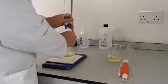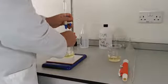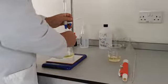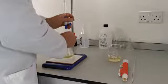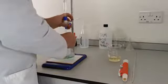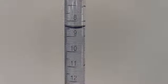As you approach the neutralisation point, you'll see the solution start to change colour. At this point, add the sodium hydroxide dropwise. Once you see a blue-green colour, stop the titration and take your reading.